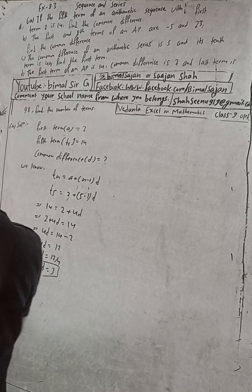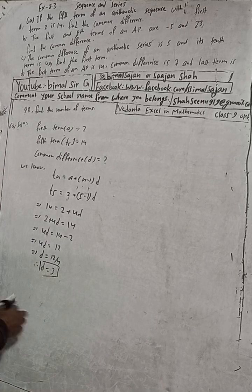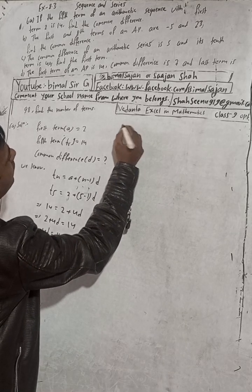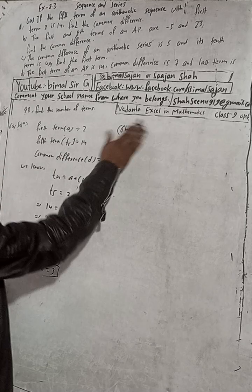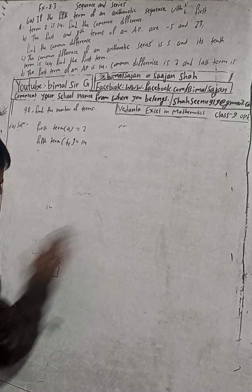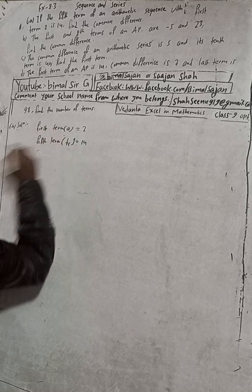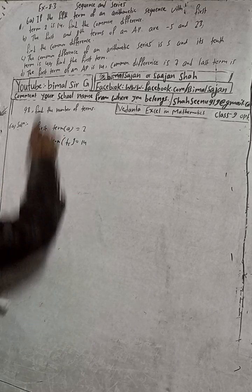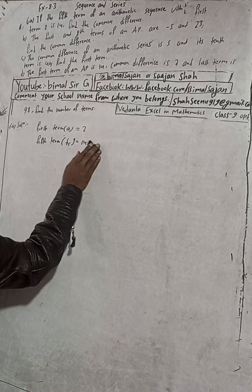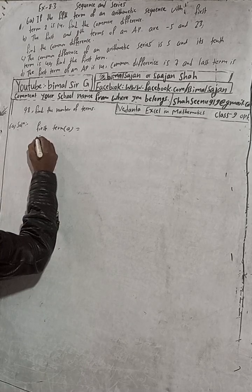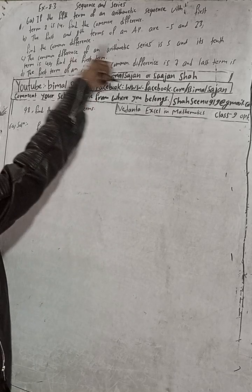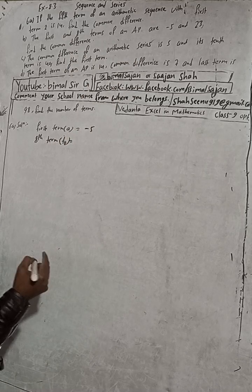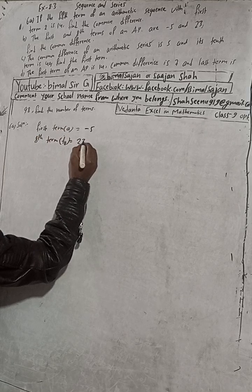Now for Part 6B: The 1st and 8th term of an arithmetic sequence are given. The first term T₁ = −5, and the eighth term T₈ = 23.